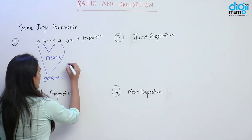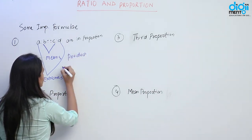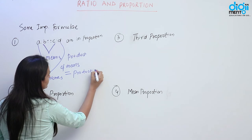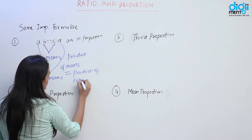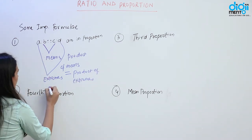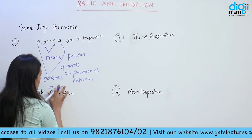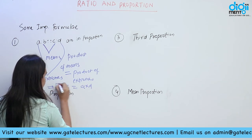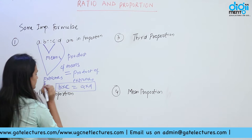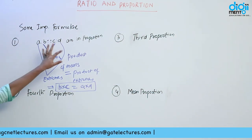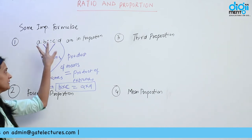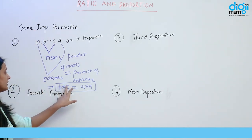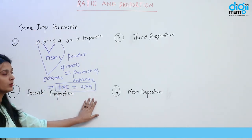Aur kya hoga? Jo product hoga hamesha means ka, that must be equal to the product of extremes. You can say B into C must be equal to A into D. Agar A, B, C, D proportions ke andar hain, toh hamara jo product hai means ka, wo equal hoga product jo hai hamare extremes ka — B into C must be equal to A into D.